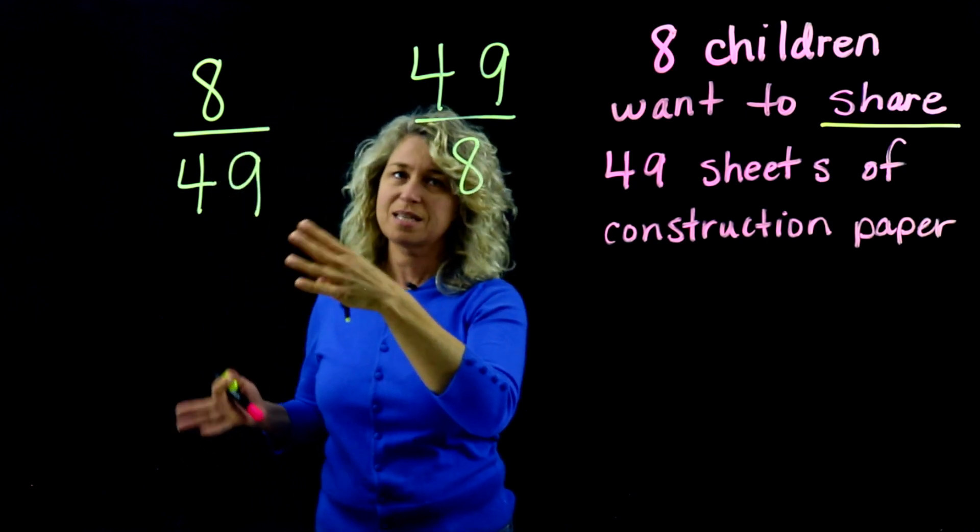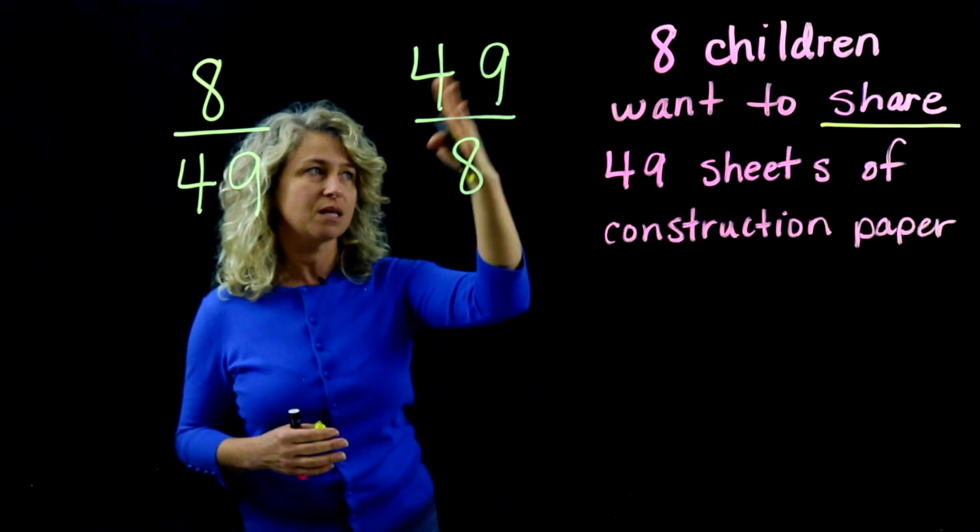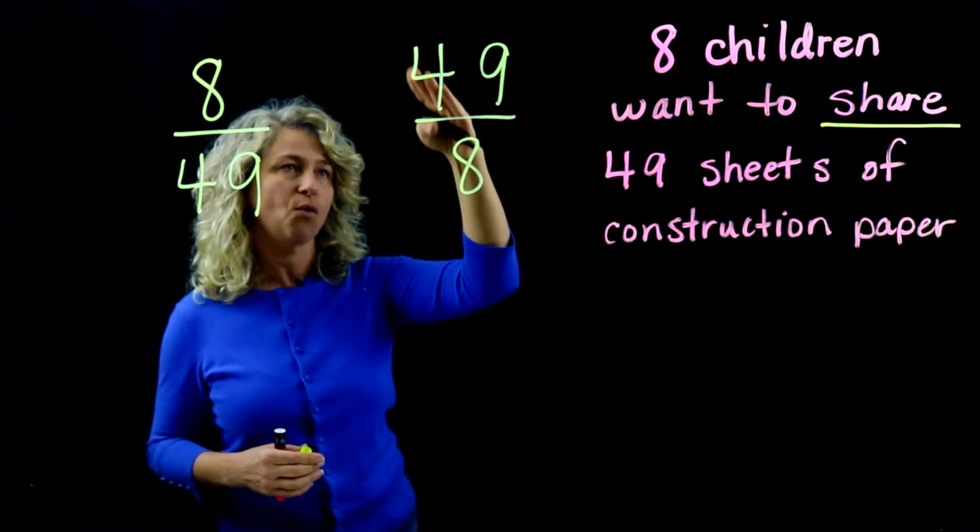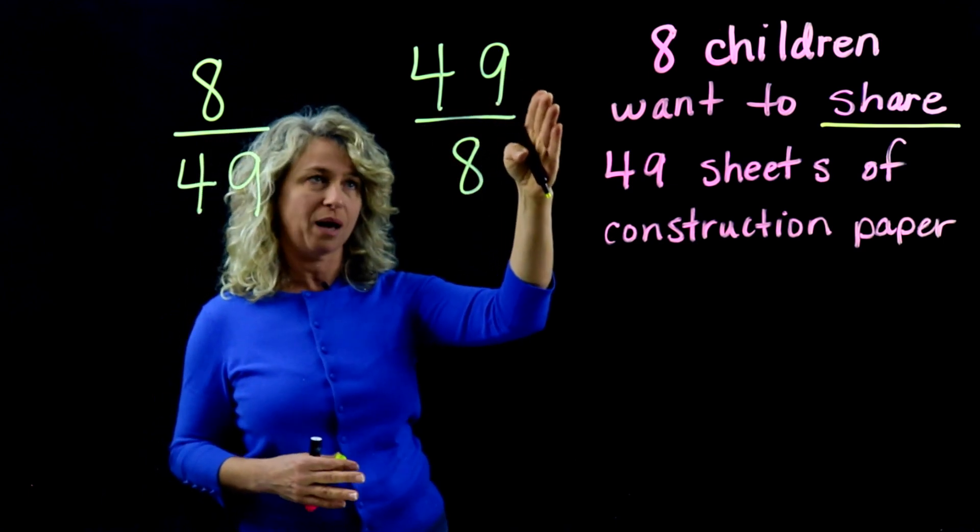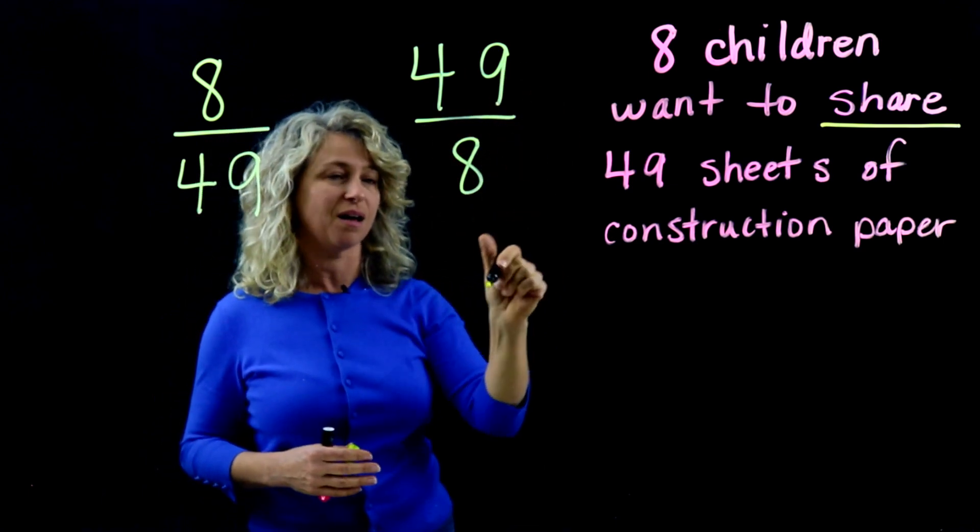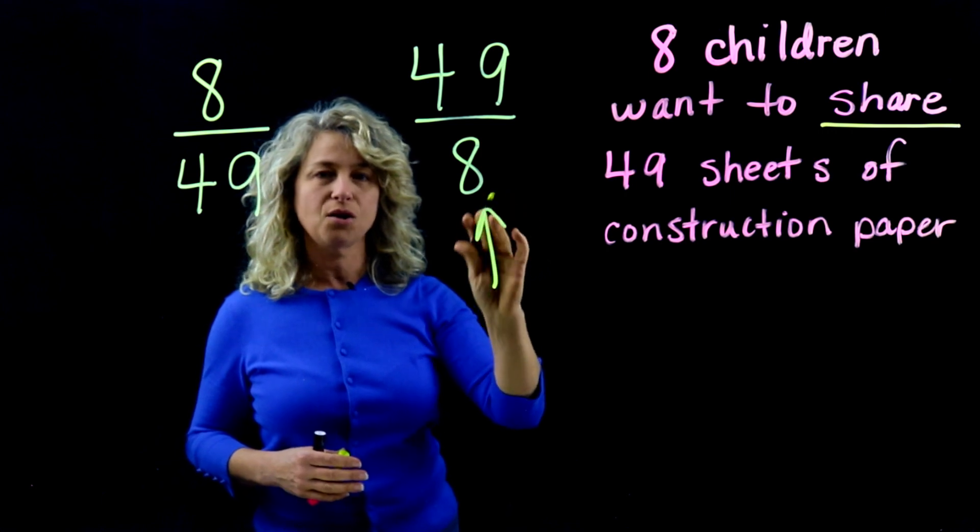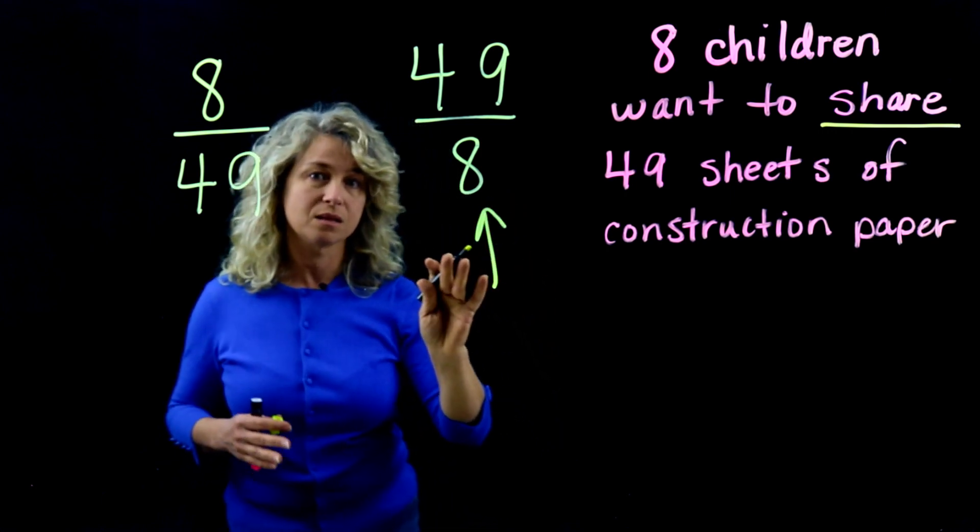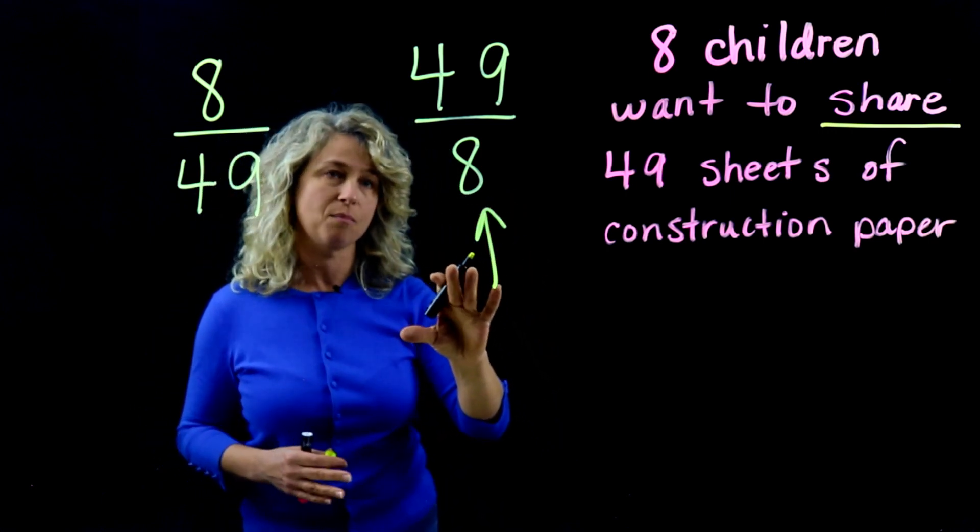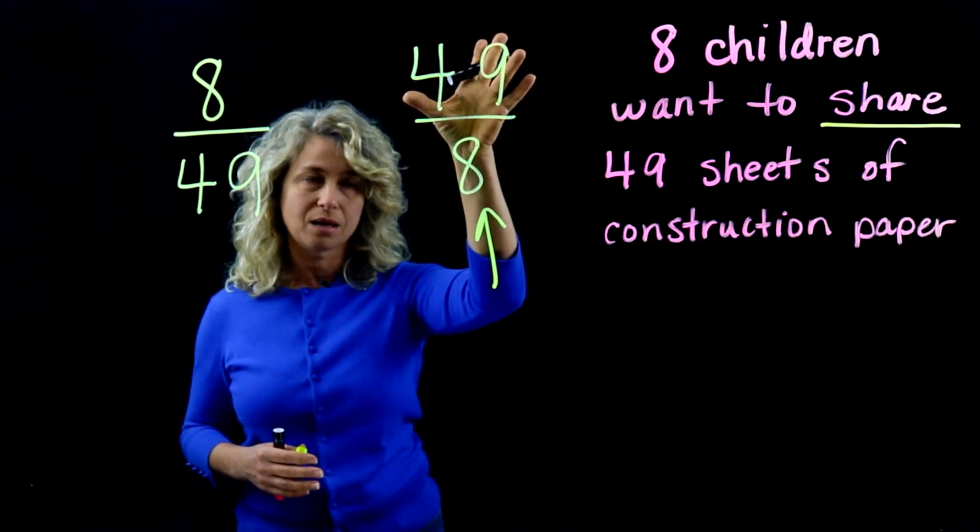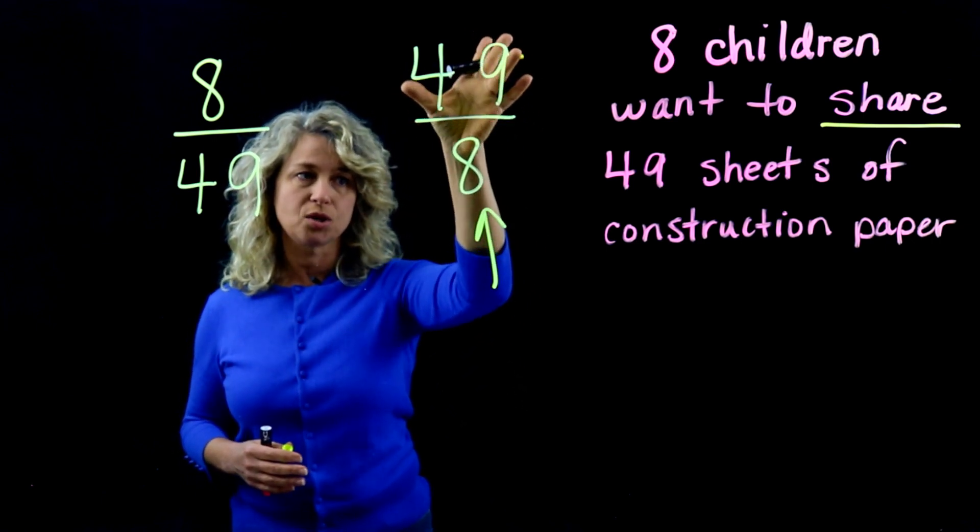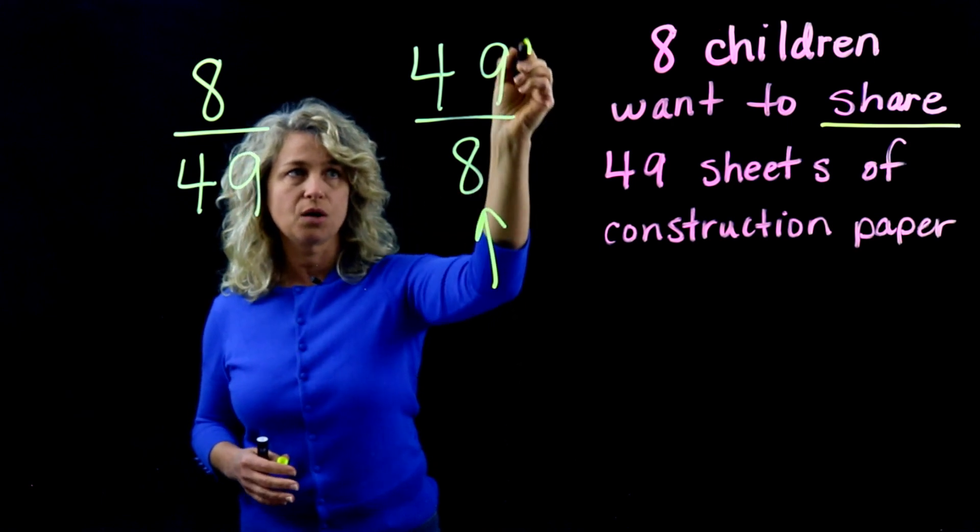So look at this example: this one is 49 sheets of construction paper shared equally among the eight students. Are you noticing a pattern? The people always have to be on the bottom. You're not going to share people, right? So you're sharing the objects among the people. So here is your correct fraction. This one does not make sense.